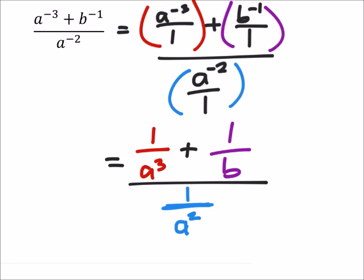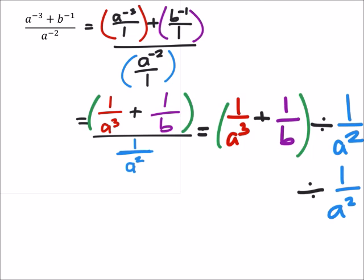All right, from here, I'm going to write this as a regular division problem, reciprocate. But right now, in the green parentheses, I need common denominators. So with that 1 over a cubed, I have an a cubed as a denominator. And then in the purple, I have 1 over b. So I just need a common denominator of b times a cubed.